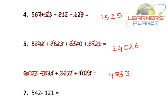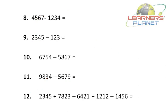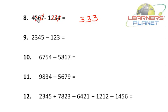Now let's take problems of subtraction. Problem: 542 − 121. It's 2 − 1 = 1, 4 − 2 = 2, 5 − 1 = 4, so the answer is 421. Next problem: 4567 − 1234. It's 7 − 4 = 3, 6 − 3 = 3, 5 − 2 = 3, 4 − 1 = 3, so the answer is 3333.